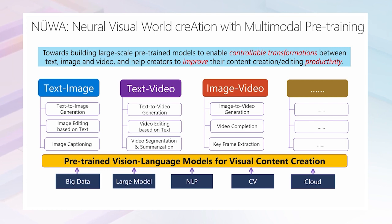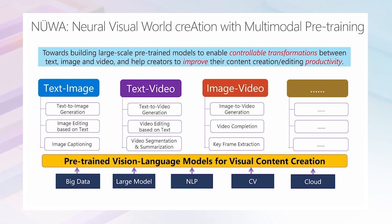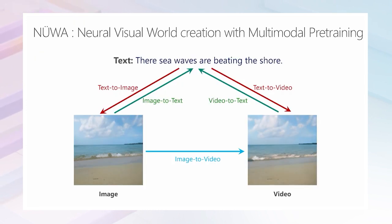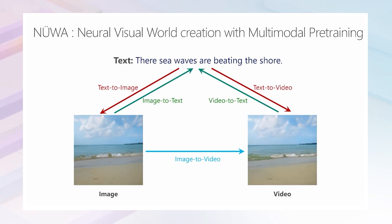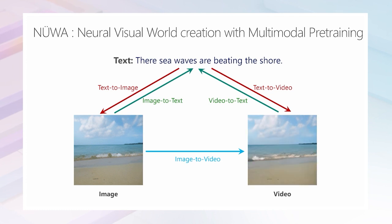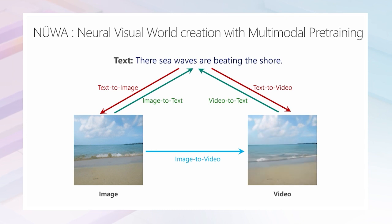Pre-training with big data, large models, NLP and CV technologies, Nuwa supports free-style transformations in the visual world. In this talk, let's start with three basic transformations: text-image transformations, text-video transformations, and image-video transformations. This graph shows the relations between these transformations. The text 'the sea waves are beating the shore' corresponds to a beautiful sand shore image with waves and clouds, and a corresponding video showing the action of beating the shore. Nuwa enables controllable transformations between the three modalities — text-to-image generation, image-to-text generation, text-to-video generation, video-to-text generation, and image-to-video generation.